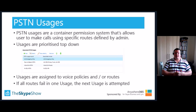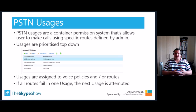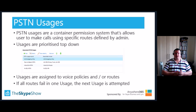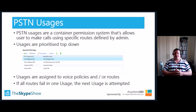Moving on to PSTN usages — these are critically important and the fundamental basis for call routing. PSTN usages are containers, like security groups. They contain voice routes that act as an access control list for call routing, and can provide users a varied level of PSTN access, from emergency calling only all the way through to unrestricted PSTN access. PSTN usages are assigned to voice policies primarily, but are also used in other areas such as network sites for location-based routing and Enhanced 911. Usages are attempted from top to bottom in the list — if the first PSTN usage has a valid route, it is used to route the call. This is important because more than one PSTN usage can contain a valid route for the same call.